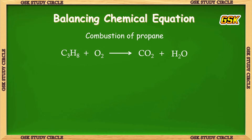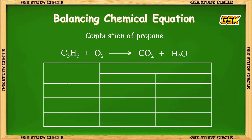What is balancing? The number of atoms on the LHS side should be equal to the number of atoms of each element on the RHS side. Let us draw a table and take the elements, number of atoms on LHS side, and RHS side.